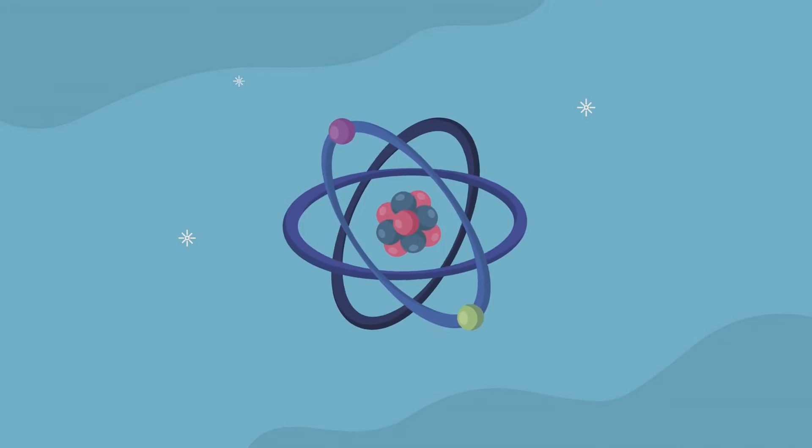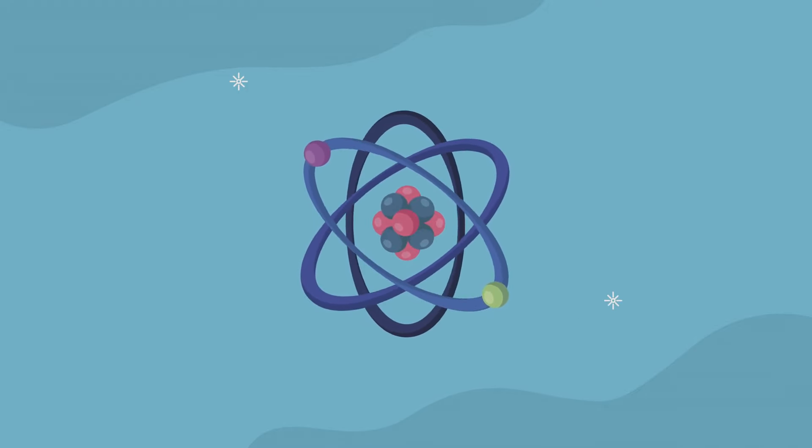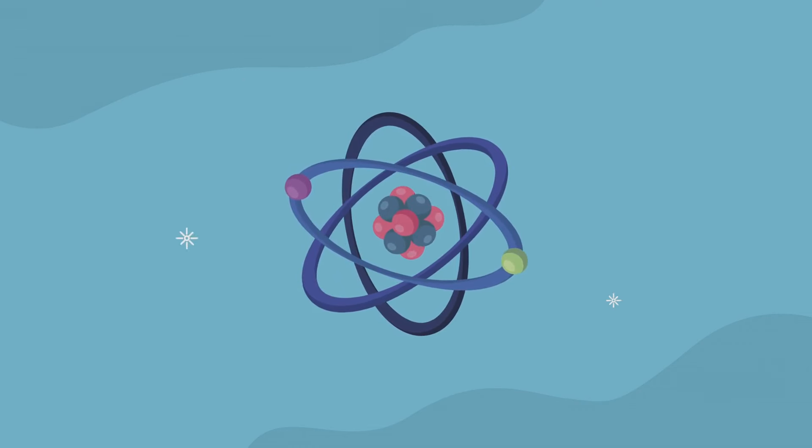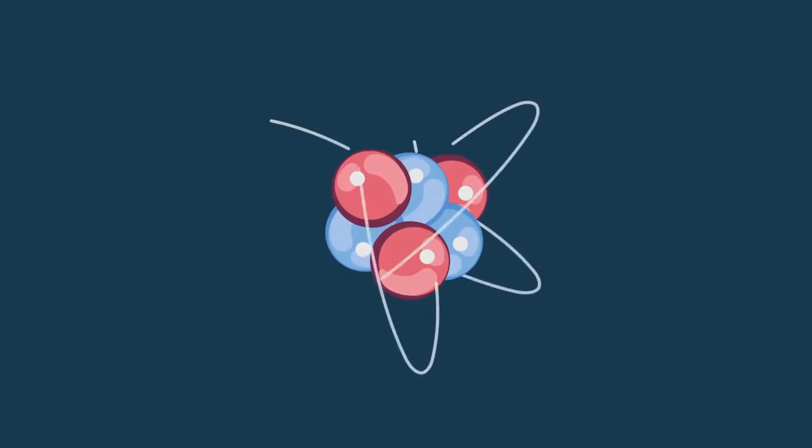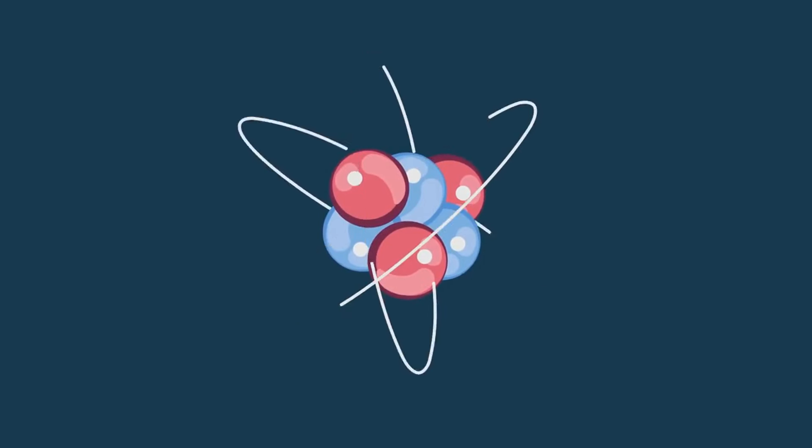In Democritus's philosophy, atoms existed not only for matter but also for such qualities as perception and the human soul. In short, he believed that everything from the ground beneath our feet to the thoughts in our minds was composed of tiny solid particles he called atoms.